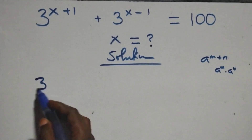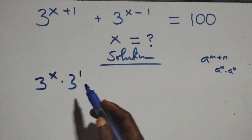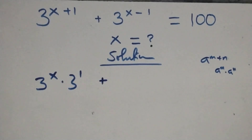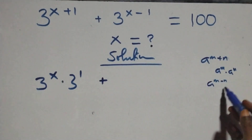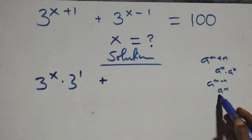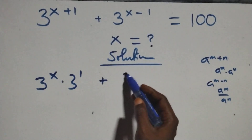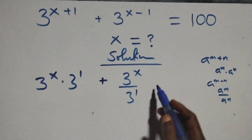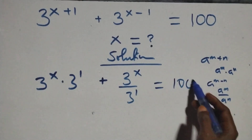At this here we have 3 raised to power x times 3 raised to power 1, then plus. Also, this follows when we have a raised to power n minus n, this is the same thing as a raised to power n over a raised to power n. At this here we have 3 raised to power x over 3 raised to power 1, then equals to 100.